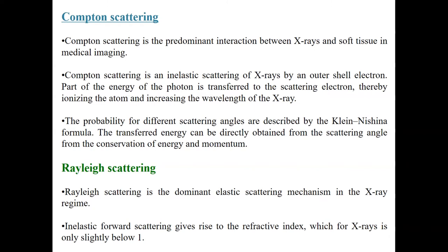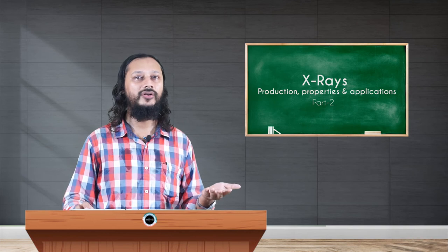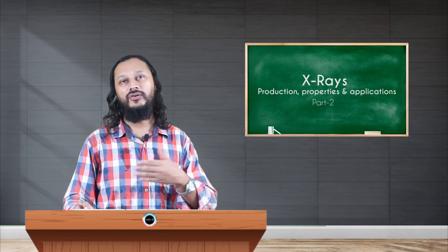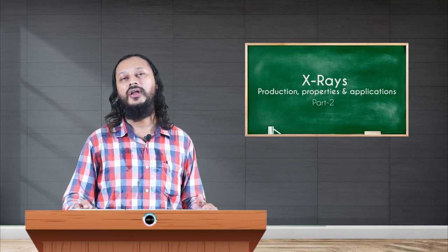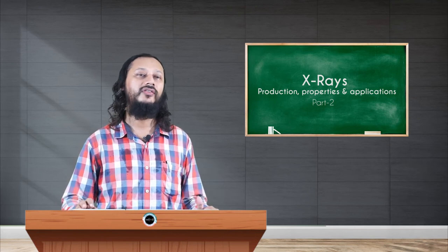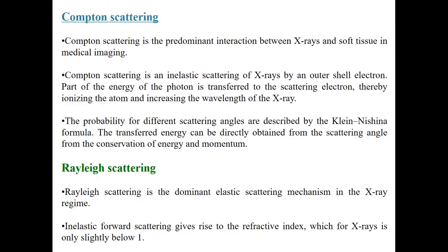Compton scattering is an inelastic scattering like I already said because it is imparting a part of its energy. Therefore, it is an inelastic scattering process of X-rays and part of the photon energy which is transferred to the scattering electron and the atom goes to an excited state. When the electron is knocked out of this atom, it comes out with some kinetic energy and the outgoing X-ray photon has got a longer wavelength as a result. Conservation of energy and momentum are of course holding true here and we can analyze this process by using the famous Klein-Nishina formula.